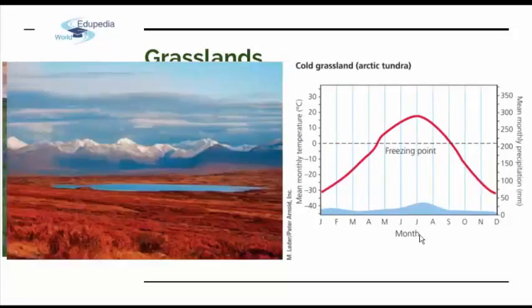Then we have cold grassland, or tundra, which lies south of the arctic polar ice cap. During most of the year these treeless plains are bitterly cold, with really cold wind, covered by ice and snow. Winters are long and dark and scant precipitation falls mostly as snow. Under the snow, these biomes are carpeted with a thick and spongy mat of low-growing plants — primarily grasses, mosses, lichens, and other plants really adapted to survive below-freezing temperatures.